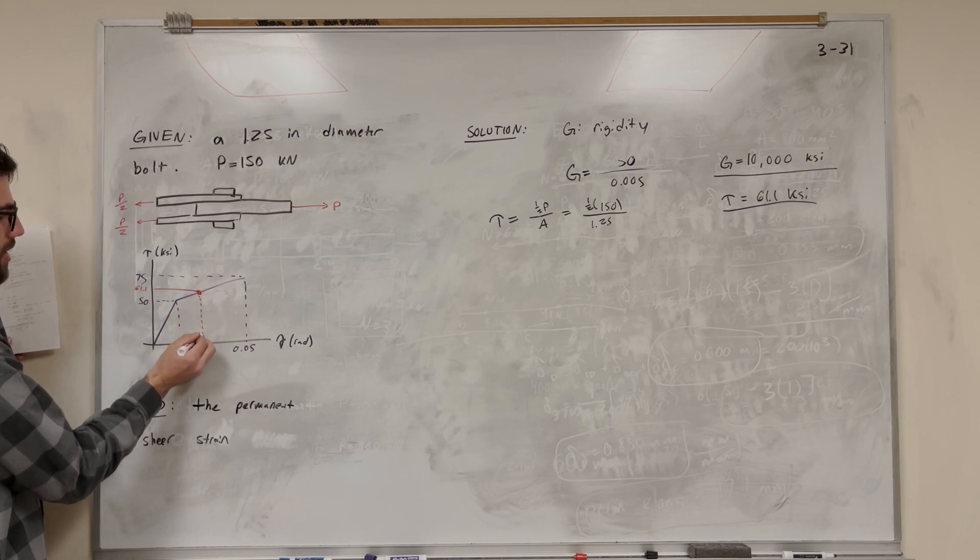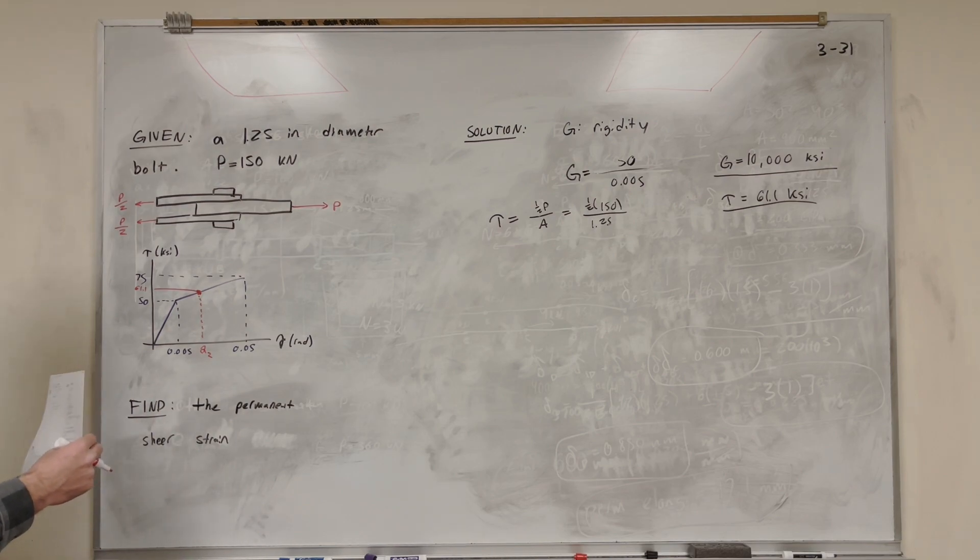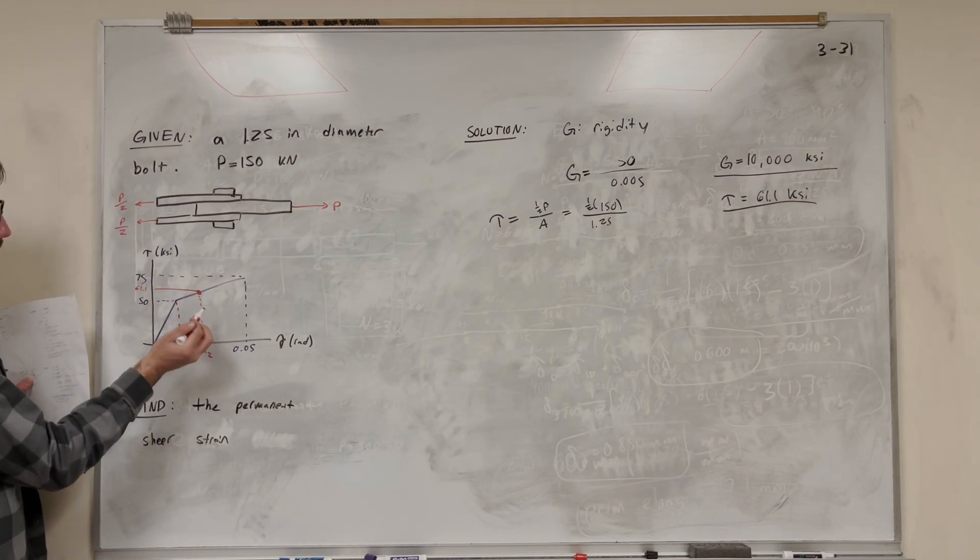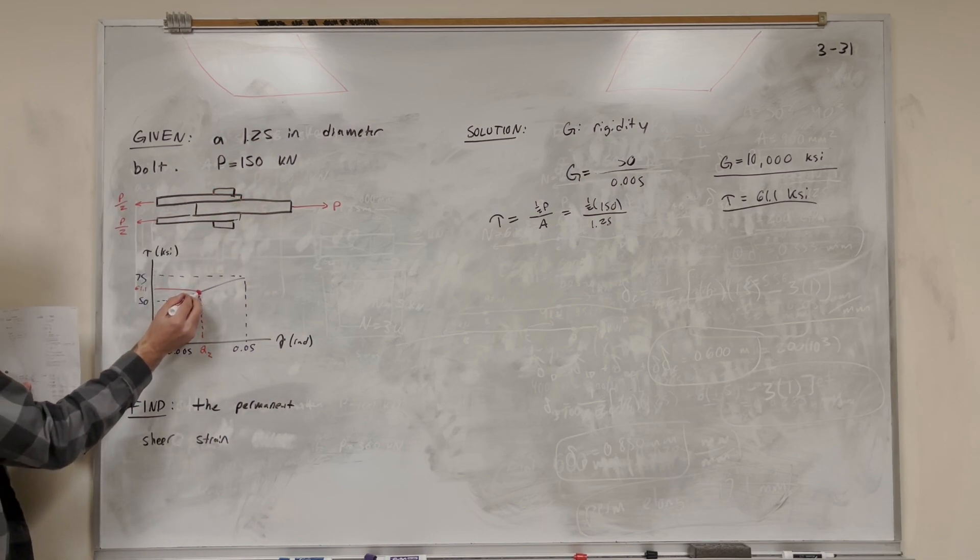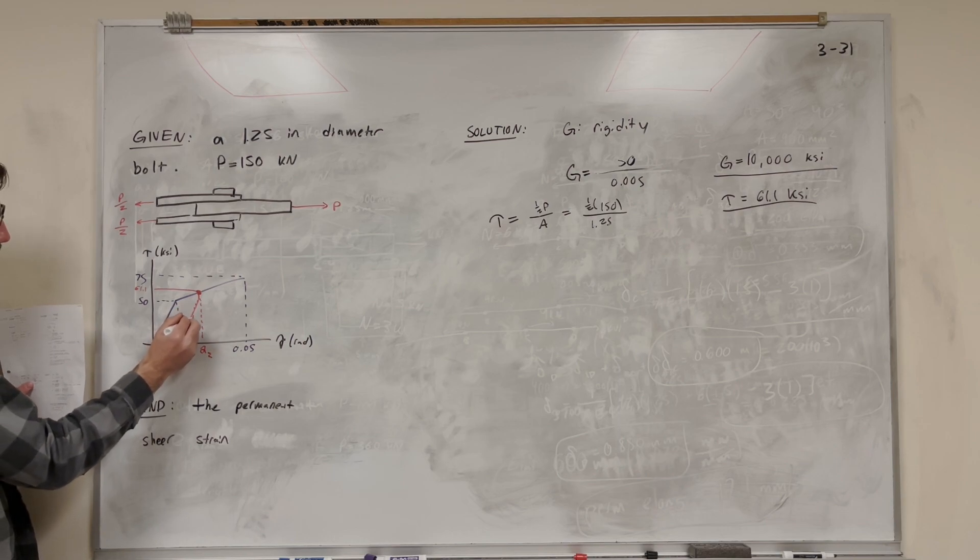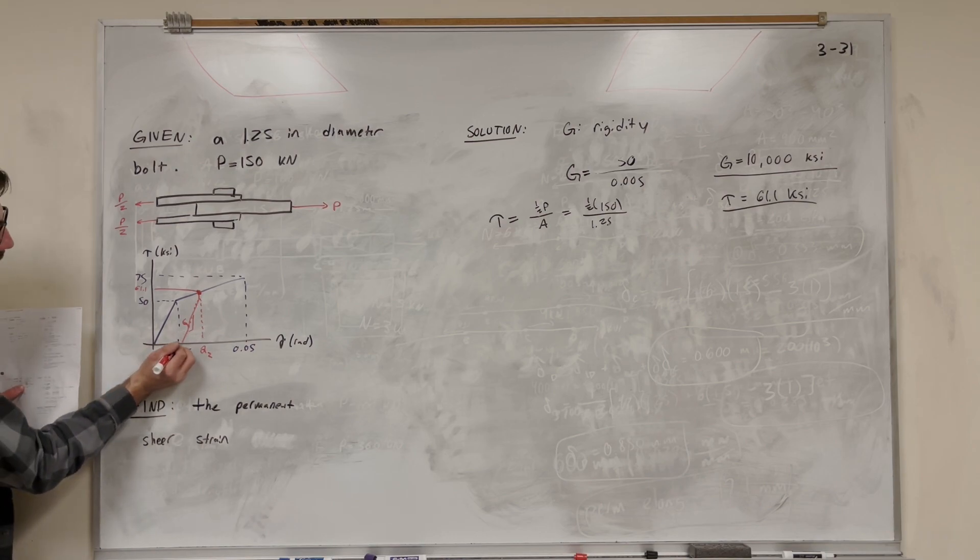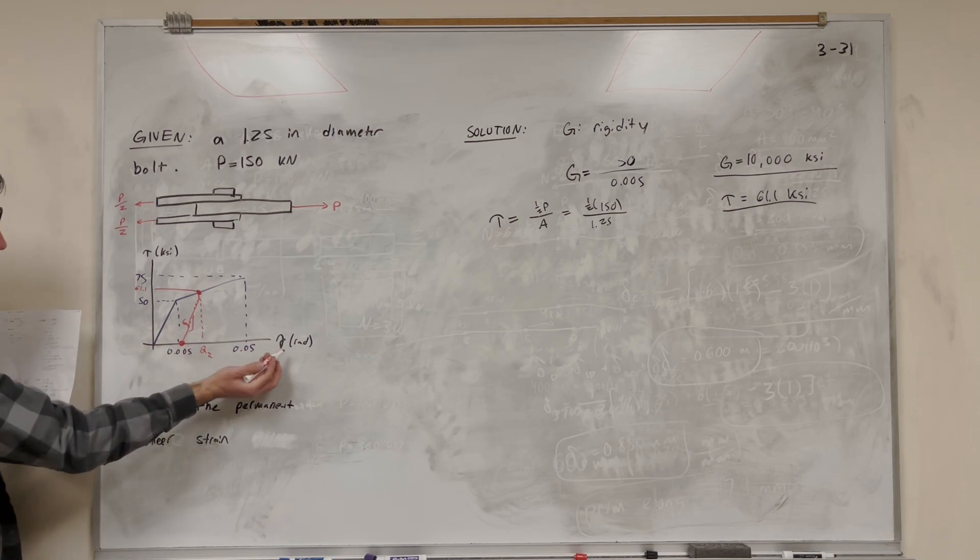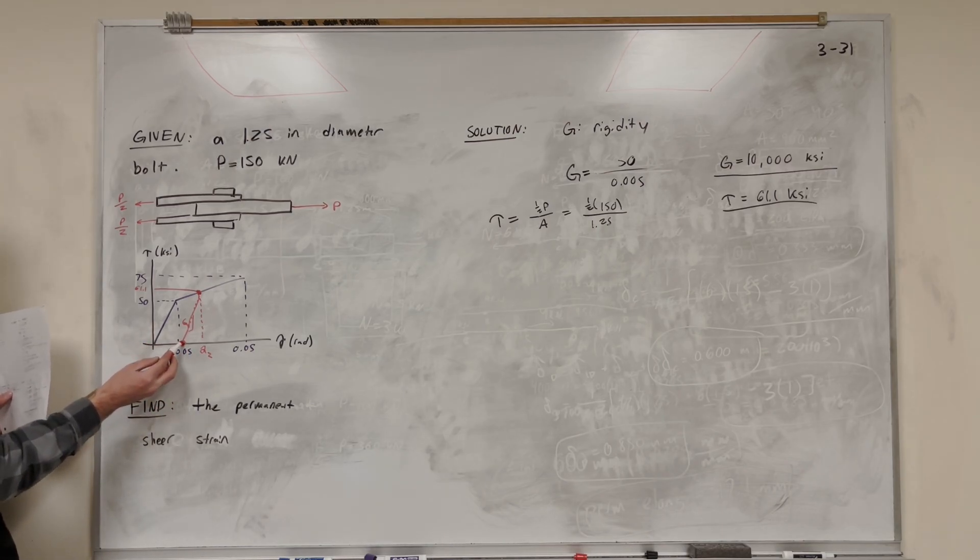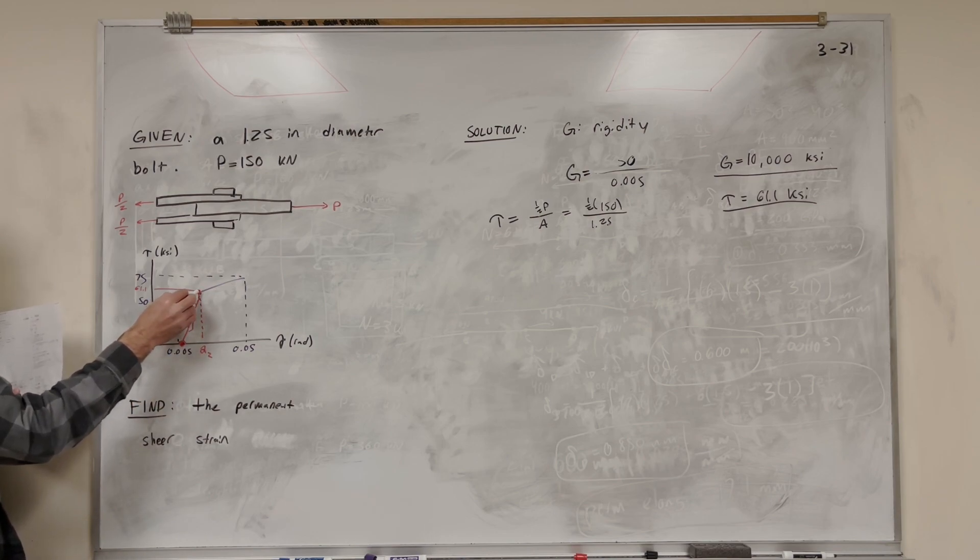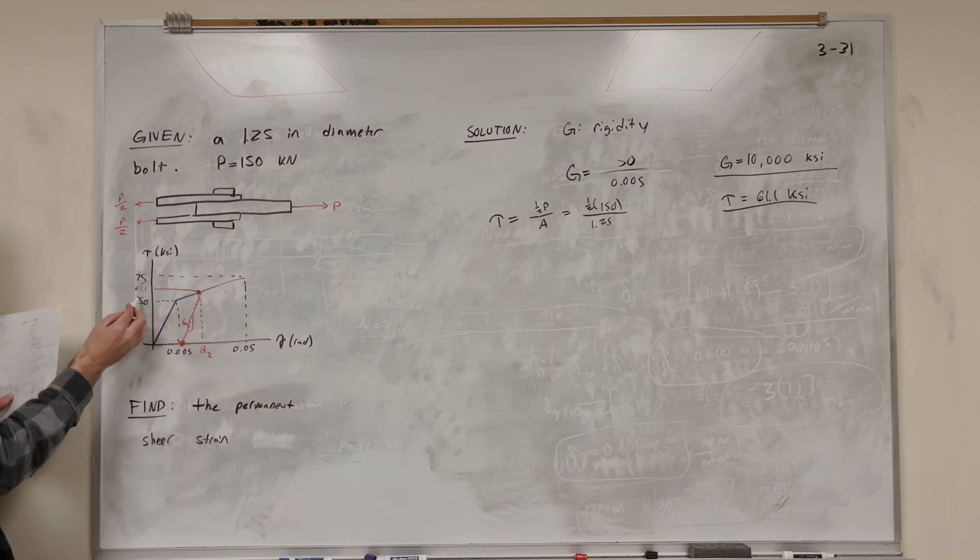Now what we need to find is what this is here, gamma 2, because when we let go of our stress here, what's going to happen is our stress is going to go back to zero. So when we let go of that force being applied, we're going to go down with the same slope of G. Whatever this slope is G, this slope is also G. So our goal is to find what point on the x-axis our strain goes back to. This is our goal, because this is going to be our permanent strain, this number here. So we need to find what happens when we go down here. And to do that, we should probably find this point first. We want to find what the strain is when our stress is equal to 61.1.